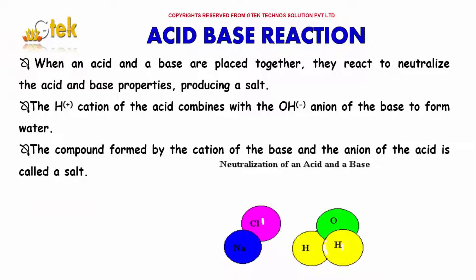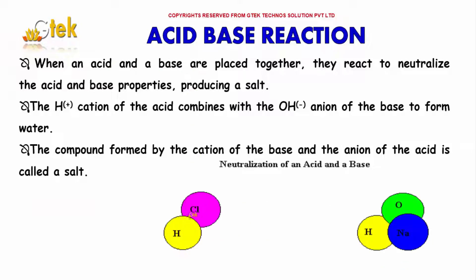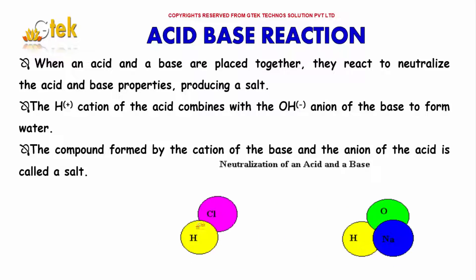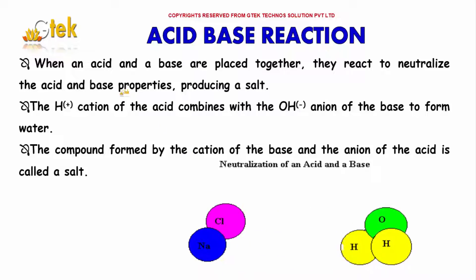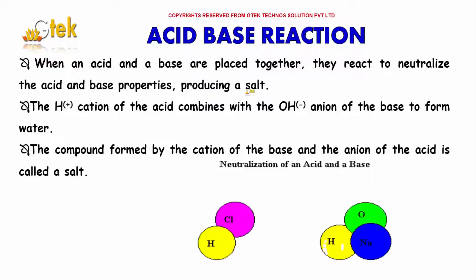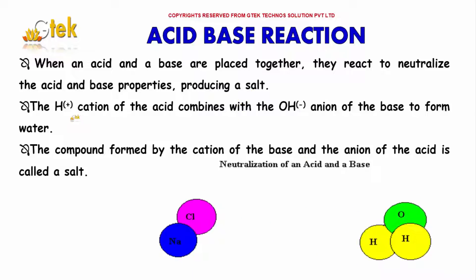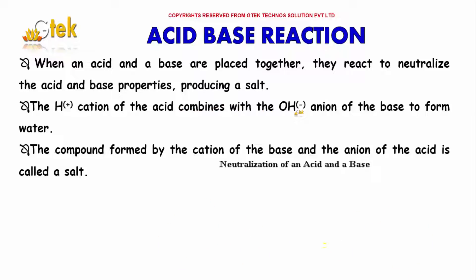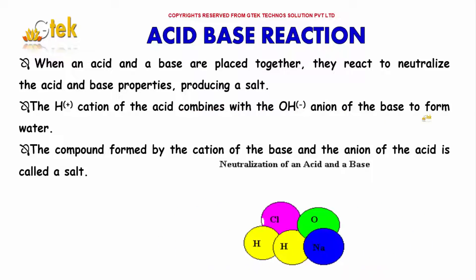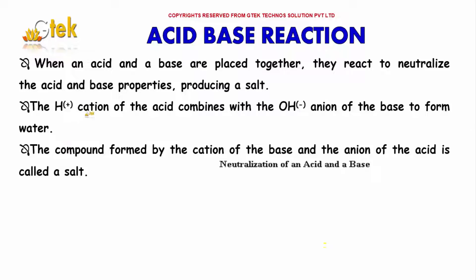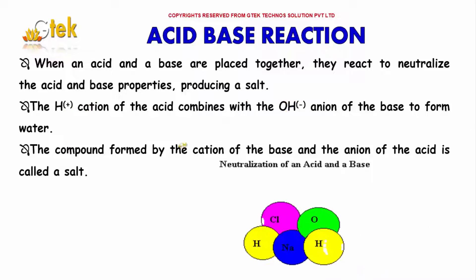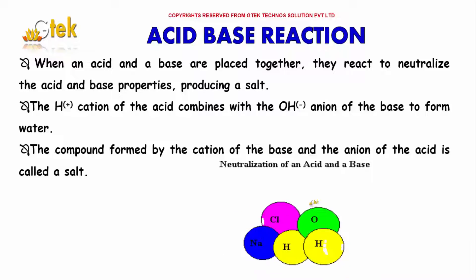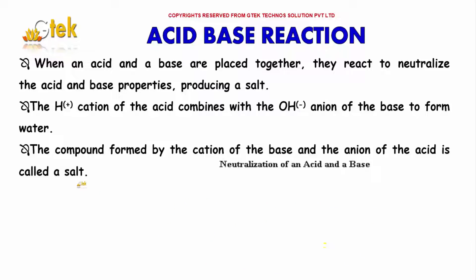When an acid and a base are placed together, they react to neutralize the acid and base properties to form salt. The H+ cation of the acid combines with the OH- anion of the base to form water, H2O. The compound formed by the cation of the base and anion of the acid is called salt.